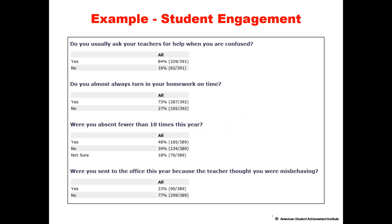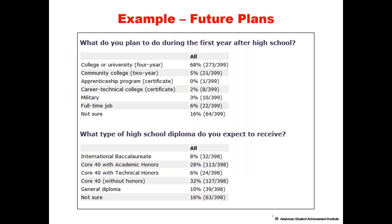Now let's look at the data reports. There are two different kinds of reports, starting with the student group reports. Some questions in these reports provide information about student engagement — for example: Do you usually ask your teachers for help when you're confused? Do you almost always turn your homework in on time? Were you absent fewer than 10 times this year? Were you sent to the office this year? You can get group data for all of those responses.